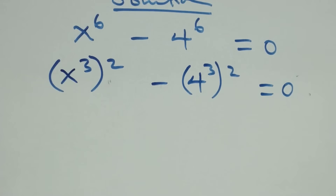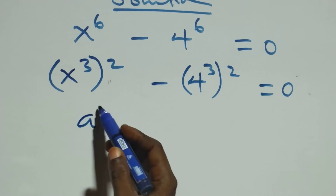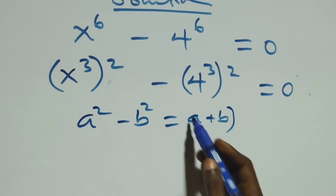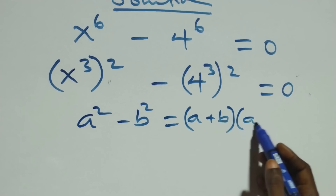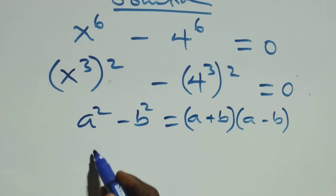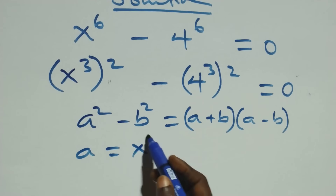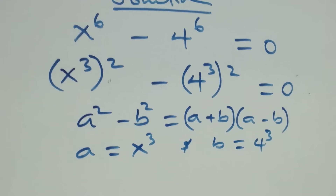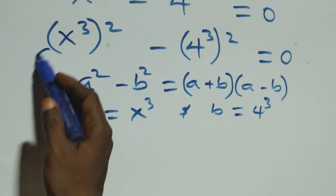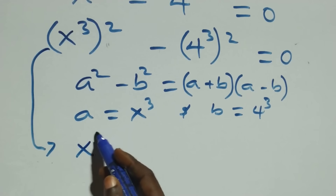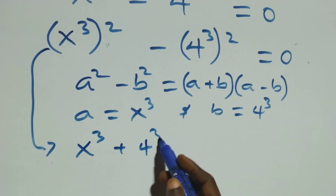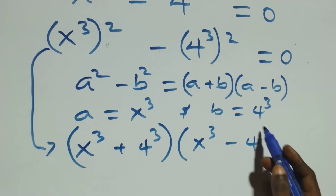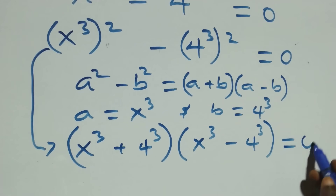The next step: this follows the difference of two squares. When we have a squared minus b squared, we write it as (a + b)(a - b). Here a is x cubed and b is four cubed. So this becomes (x cubed + four cubed)(x cubed - four cubed) equals zero.